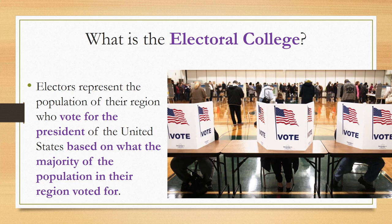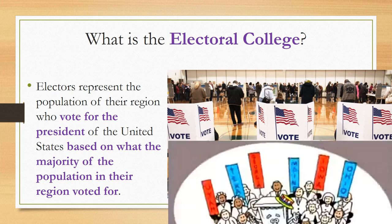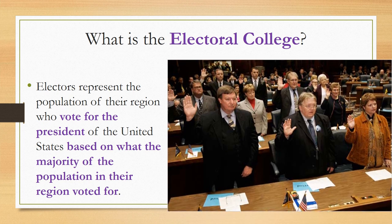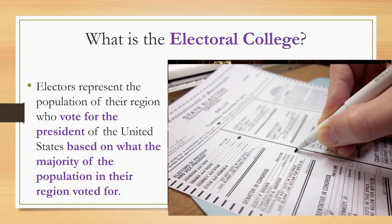Did you know that voters in the United States don't actually vote for the president? People actually vote for a group of electors when they go to the polls on election day. These electors have pledged to support a party's nominee for president. In many states, the ballot lists only the names of the nominees and not the names of the electors, so many people believe they are voting for the president.